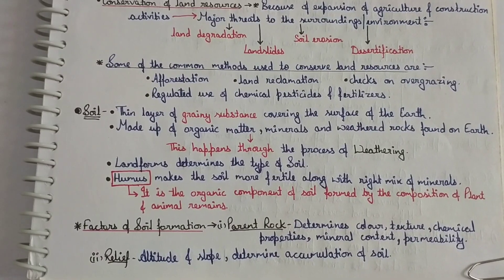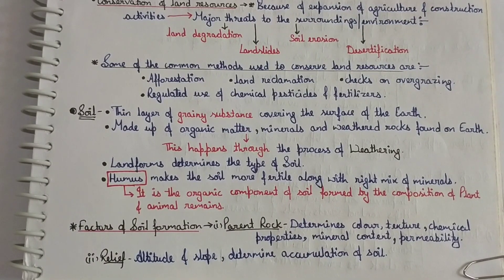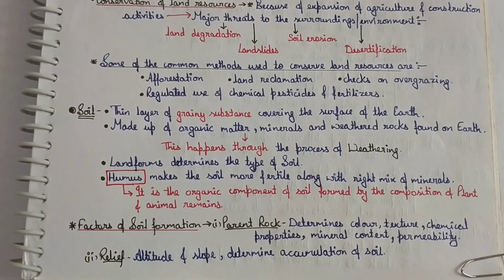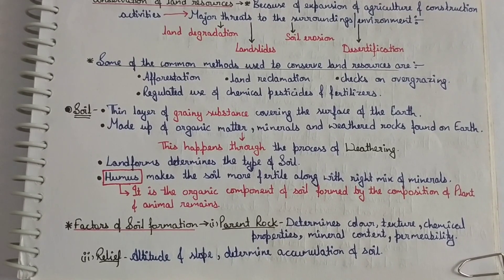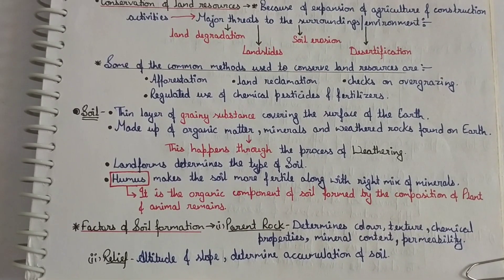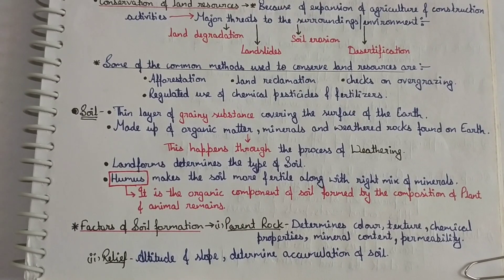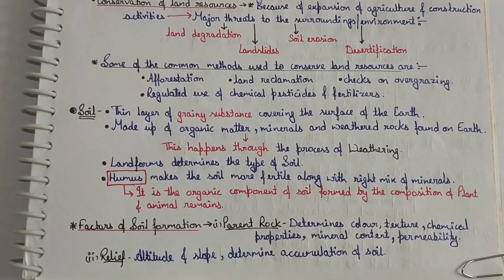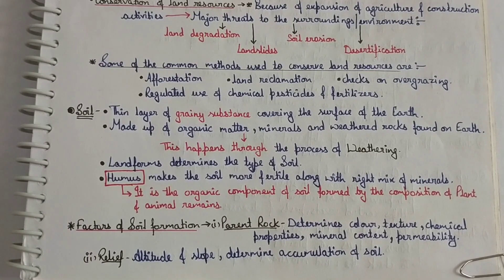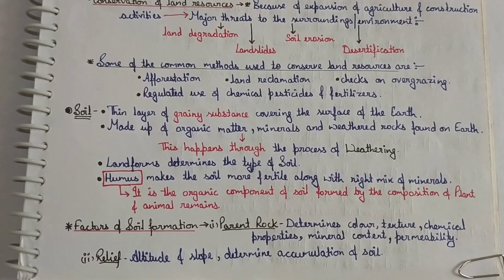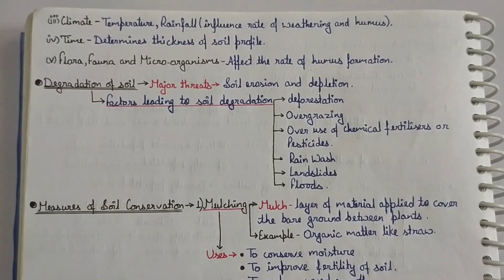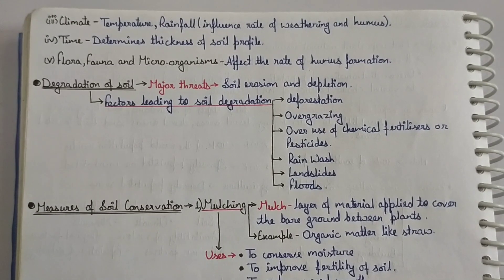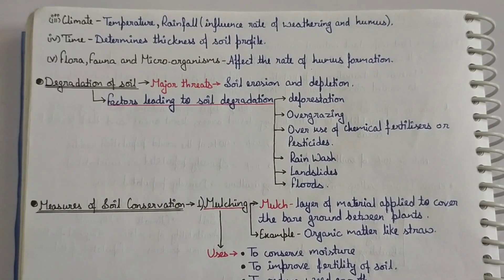Next point is factors affecting soil formation. First, parent rock — parent rock helps determine the color, texture, chemical properties, and mineral content of the soil. Second, relief — relief refers to altitude and slope, which determines the accumulation of soil. Third, climate — temperature and rainfall influence weathering and humus formation.